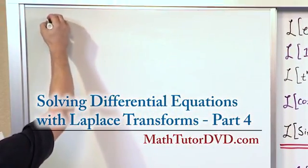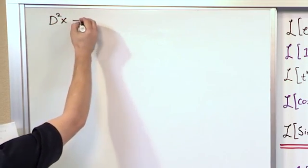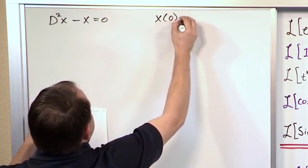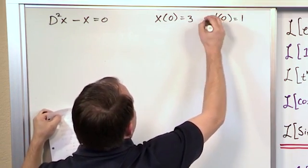So let's say we have the differential equation d²x - x = 0 and the initial condition x(0) = 3 and x'(0) = 1.